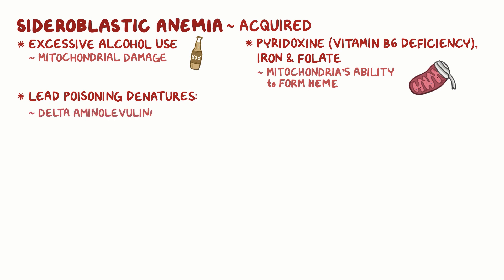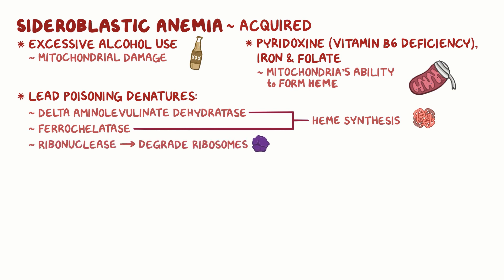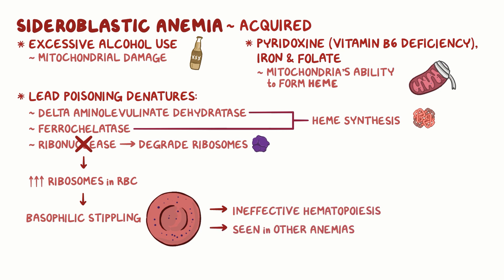Additionally, lead poisoning can also denature ribonuclease, which is an enzyme that degrades ribosomes. Without it, this leads to a buildup of ribosomes in the RBC and can cause a characteristic studded appearance on histology, called basophilic stippling. Basophilic stippling is indicative of ineffective hematopoiesis and can be seen in other types of anemias.